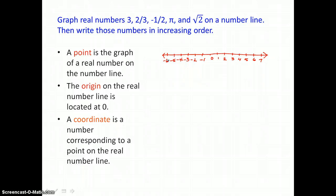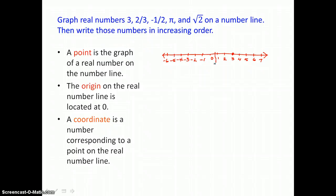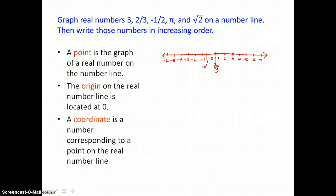First, we're going to graph three — we'll locate three on our number line and graph it using a dot or point. Then we're going to graph two-thirds, so we'll find that between zero and one, locate its position, label it with its coordinate, and graph it with a point. Next, we'll graph negative one-half, which is between negative one and zero — we'll locate, label, and graph.